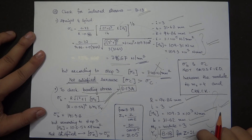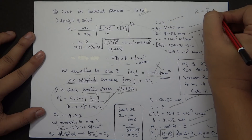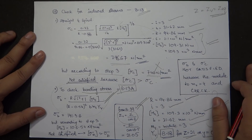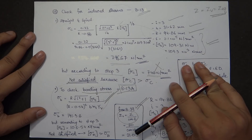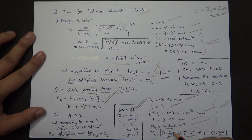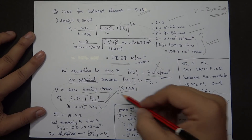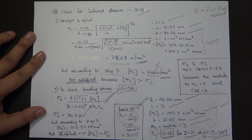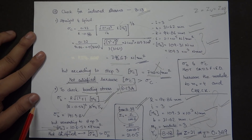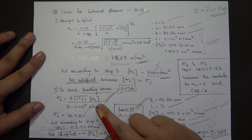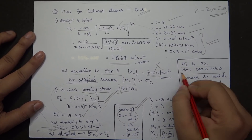Now checking the bending stress condition from page 8.13. The formula requires Y_V (Lewis form factor) from page 8.18. The equivalent tooth number Z_V = Z/cos(Delta_1) = 20/cos(18.4°) ≈ 21, so Y = 0.389. Substituting all values, the induced bending stress is 141.38 N/mm². The design bending stress from step three was only 106.54 N/mm², so this condition is also not satisfied.